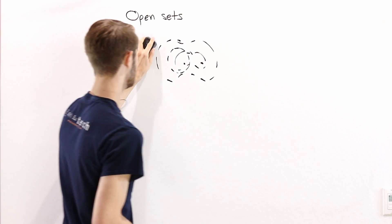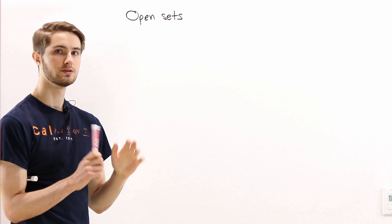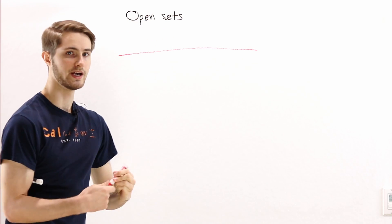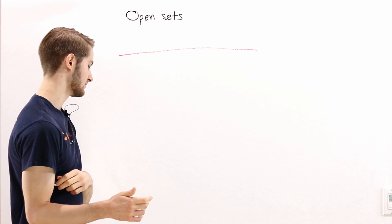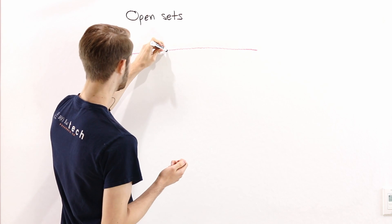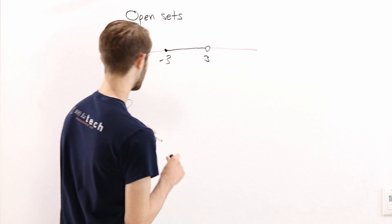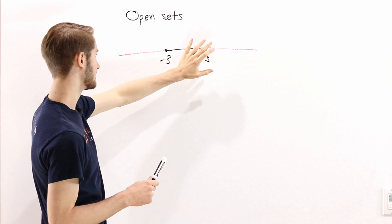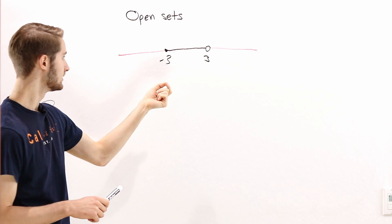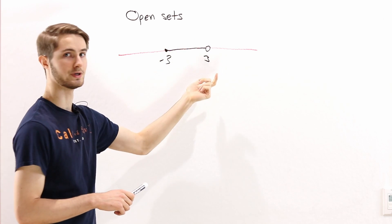Now that we have that idea, we can start to talk about the closure of a set. Say we have the number line from negative infinity to positive infinity — that's our ambient set. Inside the number line, we have the interval from negative three to three, where we include all the points between negative three and three, and we include the point negative three, but we don't include the point three.